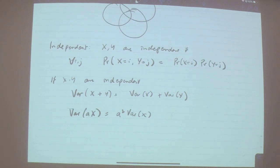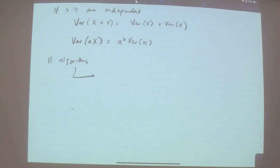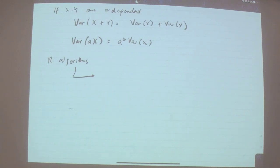There are two kinds of randomized algorithms. These basic probability facts will be needed when we analyze randomized algorithms — I'll be using them throughout. Let's get to actual randomized algorithms. There are two kinds. What properties does each guarantee? Give me one kind — when you have a randomized algorithm, what kind of guarantee do you typically expect to see in terms of time?